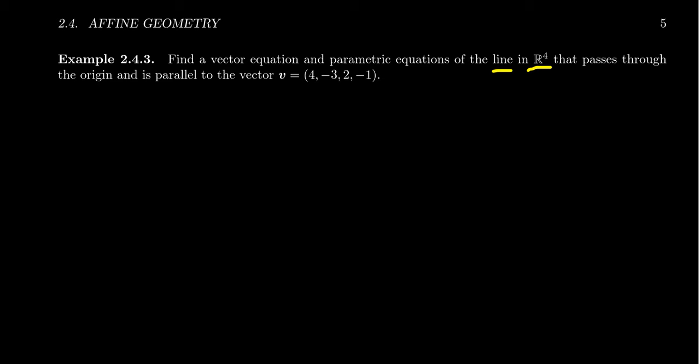Well, it really doesn't change that much at all. It's going to pass through the origin. This tells us that our X0, we can actually take as the zero vector. The origin is just the zero vector.